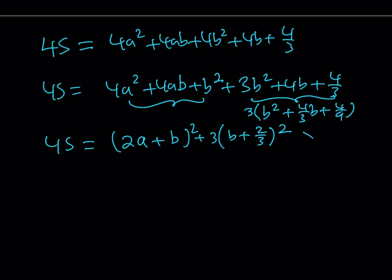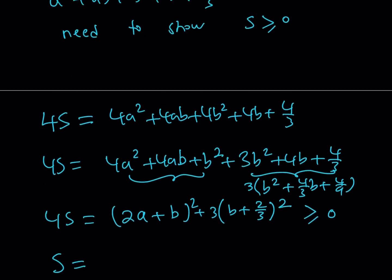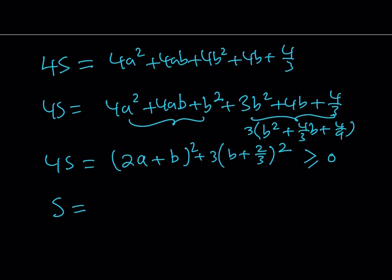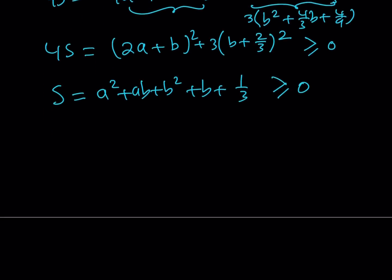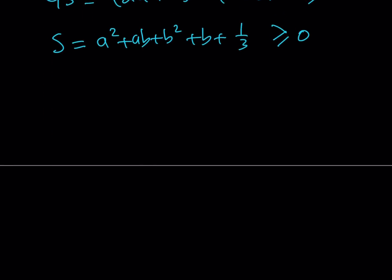Therefore, we were able to prove that 4s is always greater than or equal to zero. But that just means that you can divide both sides by 4 and get the s, which is our original expression, a squared plus ab plus b squared plus b plus one third is greater than or equal to zero. Because 4s is greater than or equal to zero, s is greater than or equal to zero. Because you can divide both sides by a positive quantity without changing the inequality.